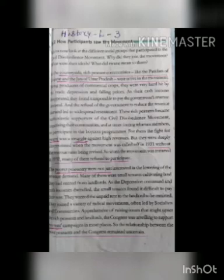In the countryside, rich peasant communities like the Patidars of Gujarat and that of other places were active in the movement. Being producers of commercial crops, they were very hard hit by the trade depression and falling prices. As their cash income disappeared, they found it impossible to pay the government's revenue demand. And the refusal of the government to reduce the revenue demand led to widespread resentment.